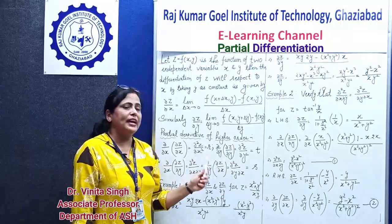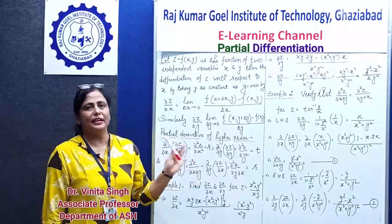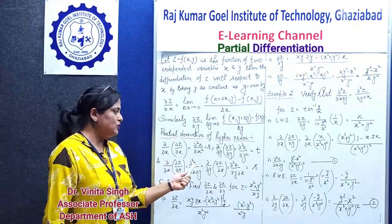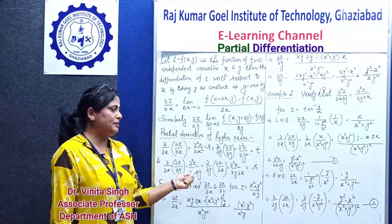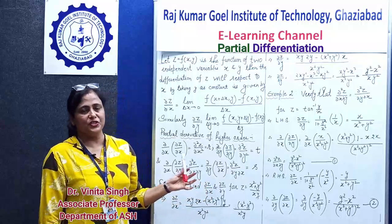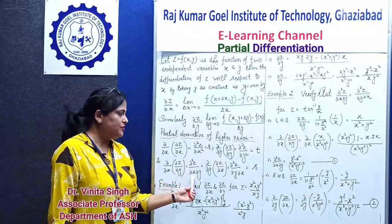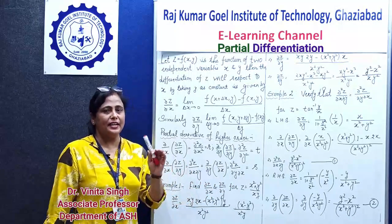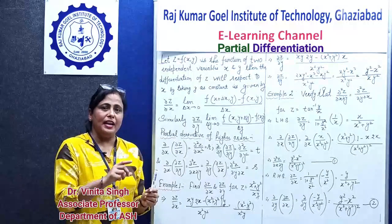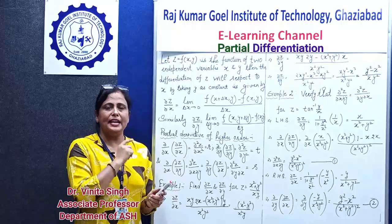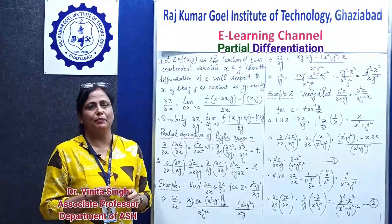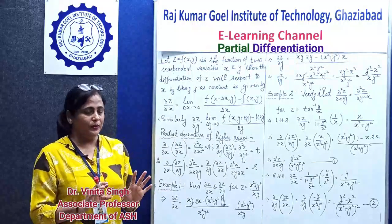The symbols r, s, t are new notation used for solving numericals. An important property is that ∂²z/∂x∂y = ∂²z/∂y∂x. This is always verified for any function z — whether you differentiate first with respect to x and then y, or first with respect to y and then x, both second-order mixed partial derivatives will always be equal.